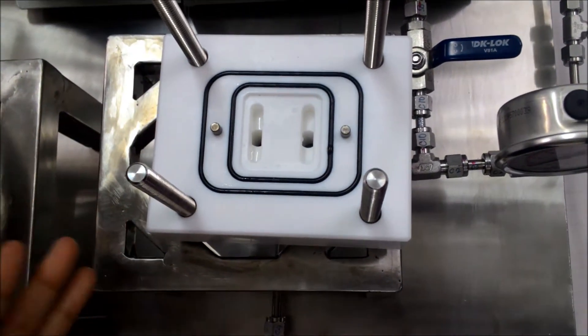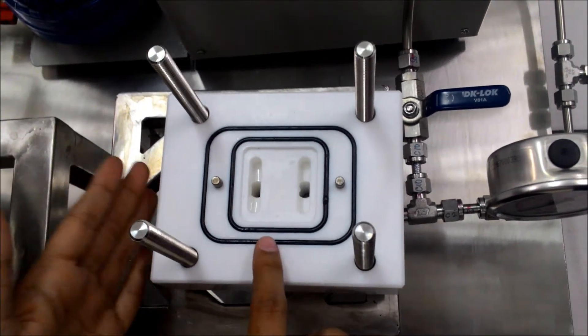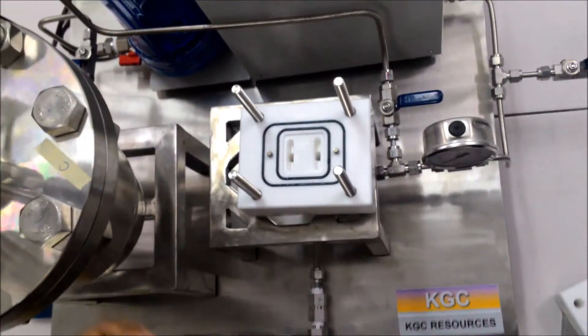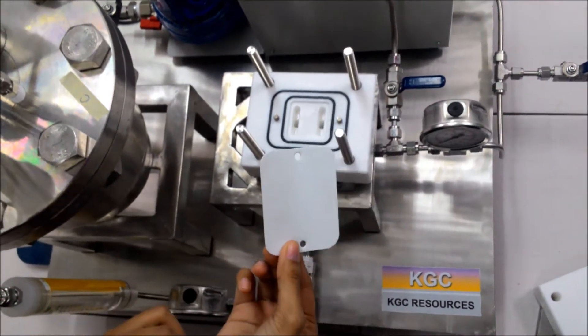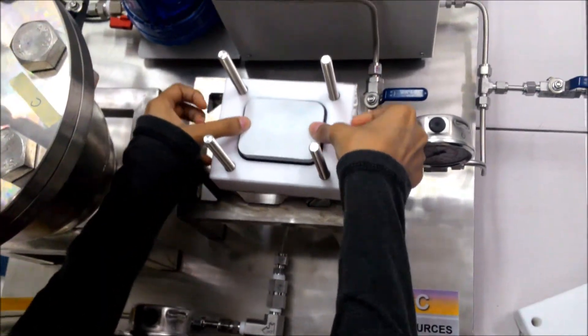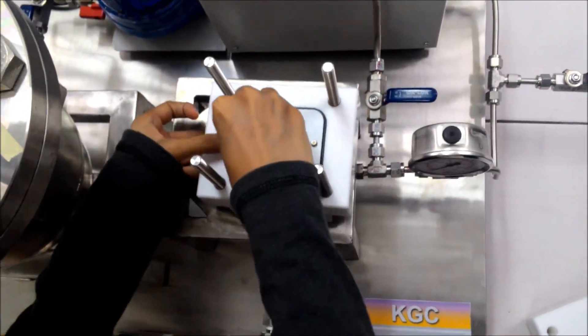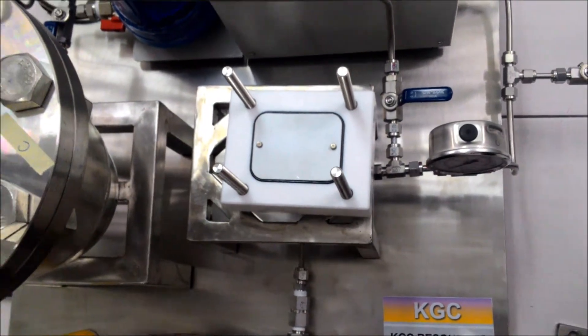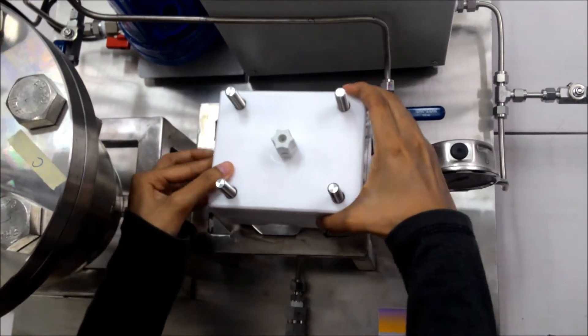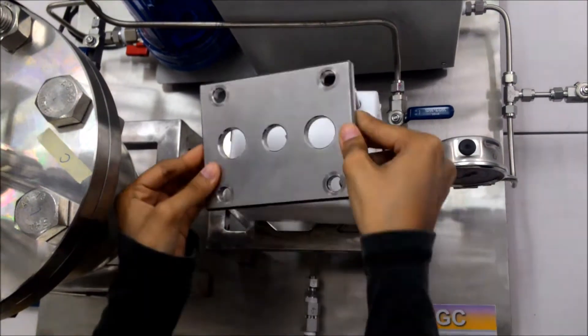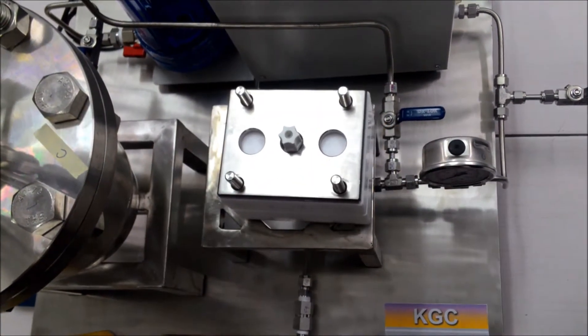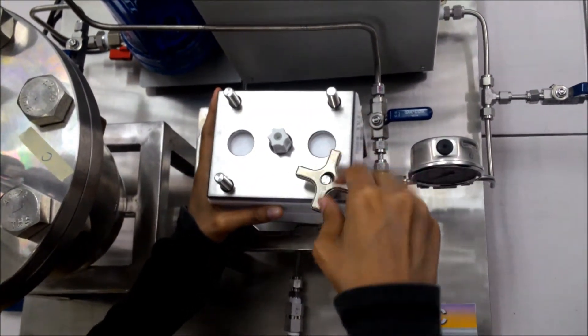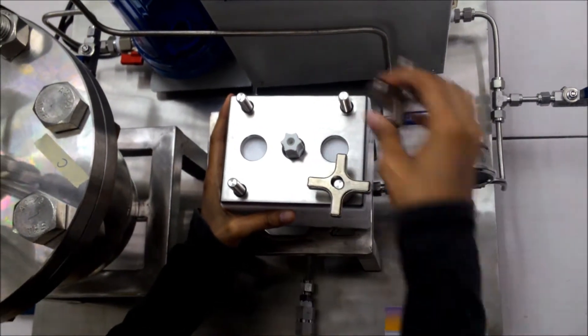We put the membrane but this is just only the template membrane. Then we put the top cell and we tighten the fastener nuts of each of the corners like this.